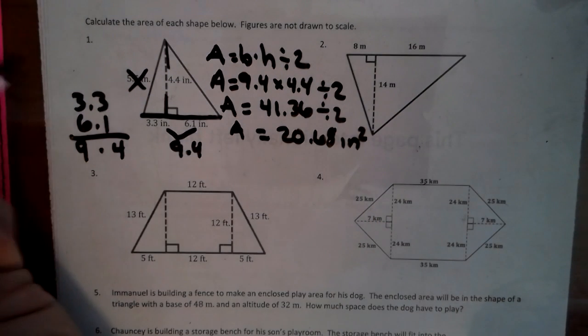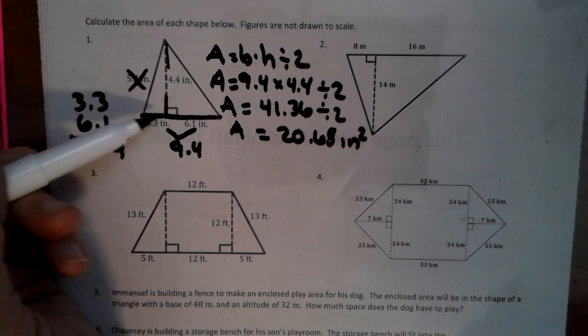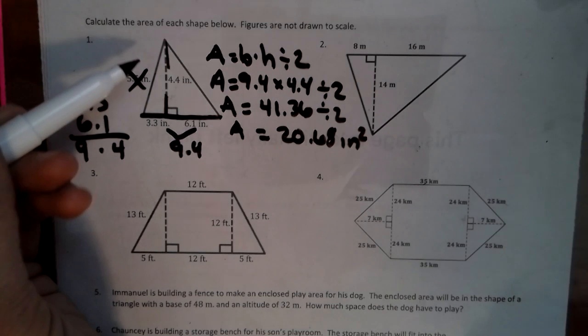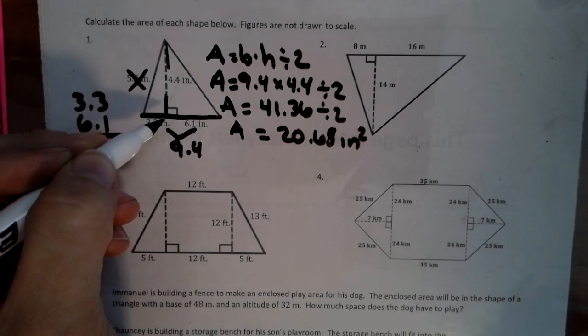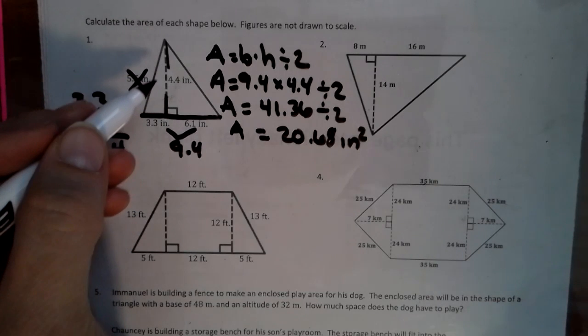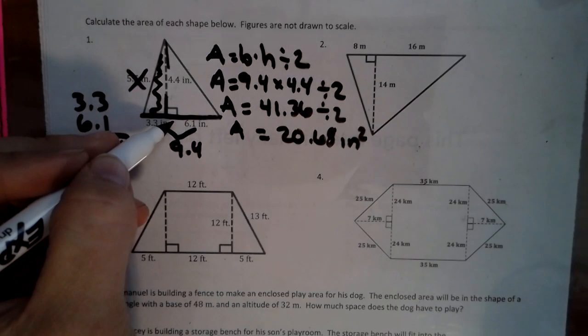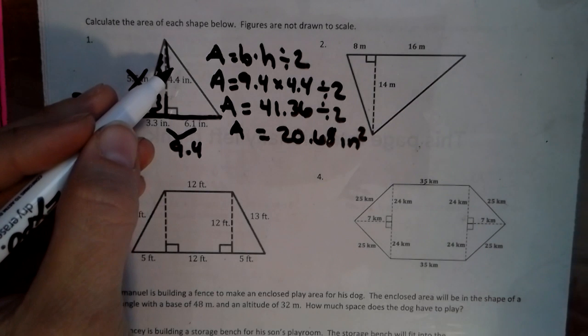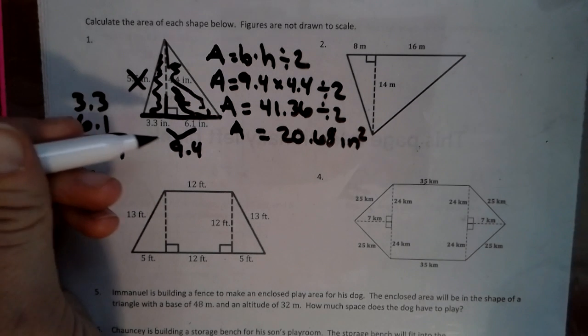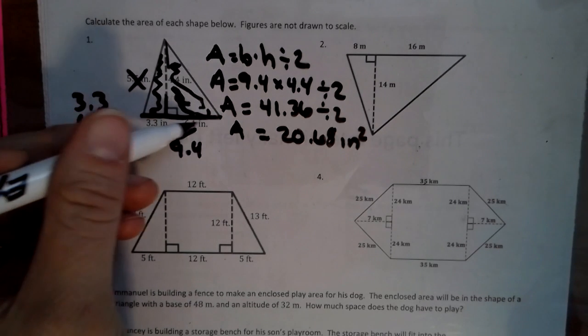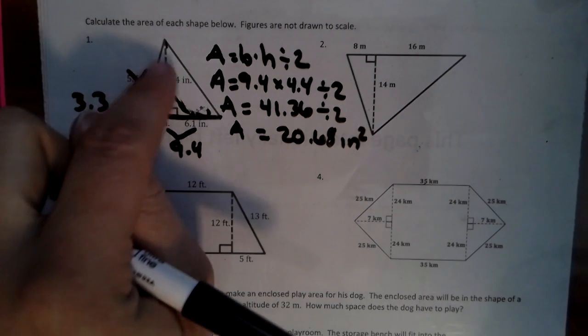Now, the only thing different from today than yesterday is that the height is going through the shape and we're using the combination of two triangles. So another way that we could do this is we could do 3.3 times 4.4 divided by 2, get the answer to that side, and then add them together. But I like to add the two bases together and just use it. So that's that one.